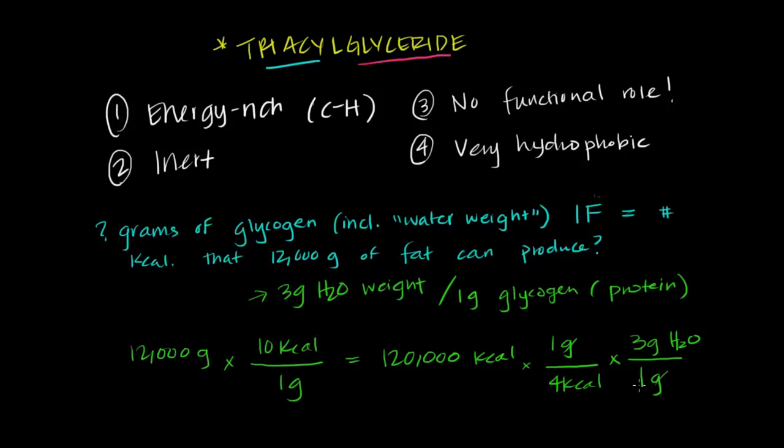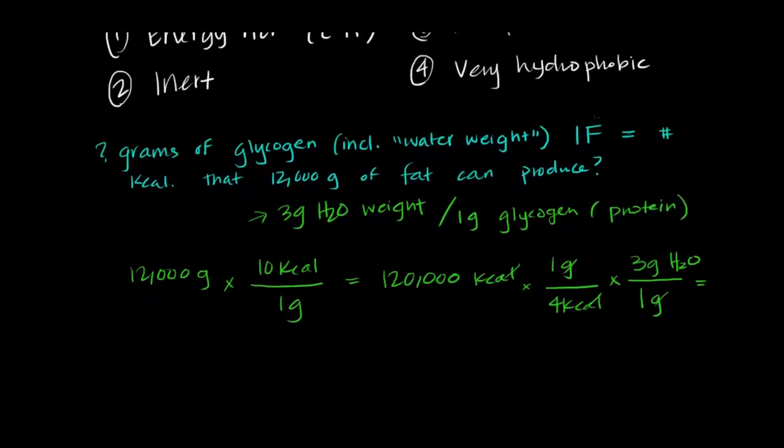So our units are going to cancel out here, and here, and all together, if we scroll down, we end up getting 120,000 divided by four ends up being 30,000 times three, which ends up being a whopping 90,000 grams of glycogen that would weigh us down in order to produce the same number of calories as only 12,000 grams of fat. So nearly a seven to eight times fold difference in the amount of weight that our bodies would have to carry.